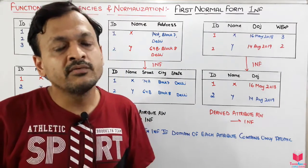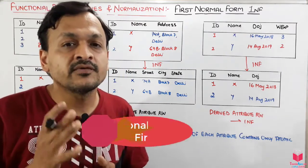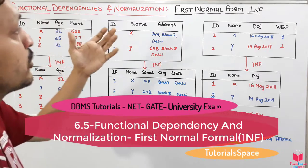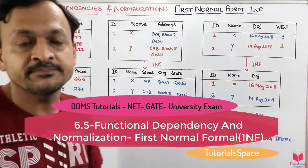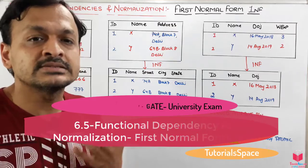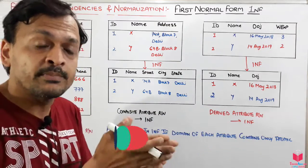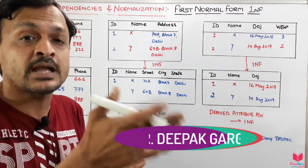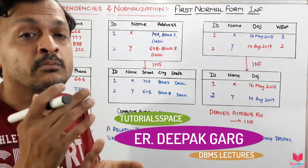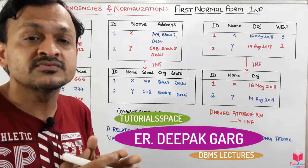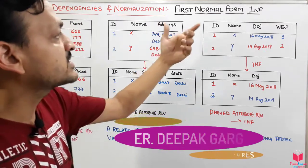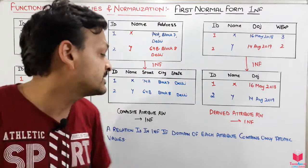Today we will discuss the First Normal Form in the functional dependency and normalization section. The normal form is basically a step-by-step process by which we can remove redundancy and anomalies from a table. We will discuss the First Normal Form in DBMS.